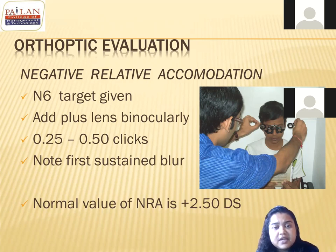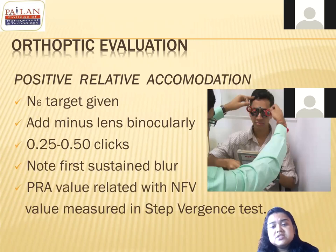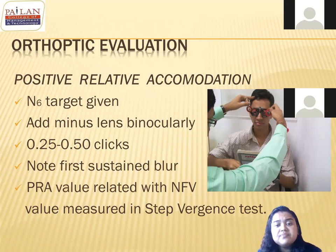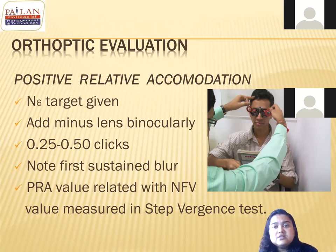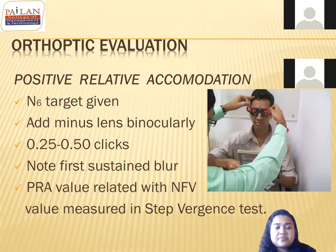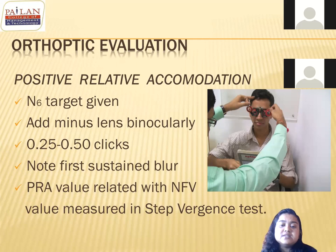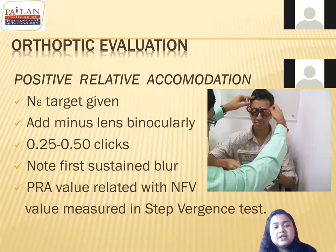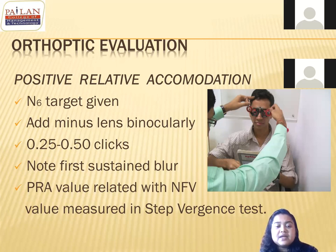For positive relative accommodation (PRA) you stimulate the accommodation by adding minus lenses in -0.25 steps, again noting the first sustained blur. The PRA value is correlated with the negative fusional vergence (NFV) value from the step vergence test, and also with the AC/A ratio. For PRA there is no fixed normal value — we correlate it with the NFV value.